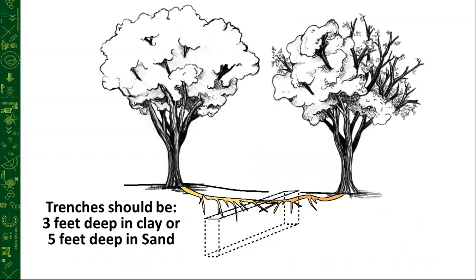Trenches should be three feet deep in clay or five feet deep in sand. It's not always practical depending on slopes, dense wooded areas, or hardscapes. In my experience, most yards with really nice elms tend to have wide open flat lawns, making trenching more feasible. I contrast this with oak wilt sites, which tend to be more wooded and rugged — elm sites are generally much more accessible for trenching.